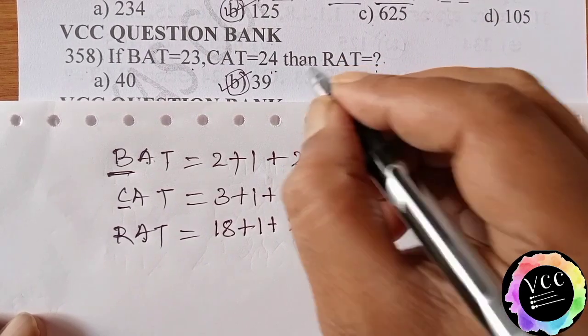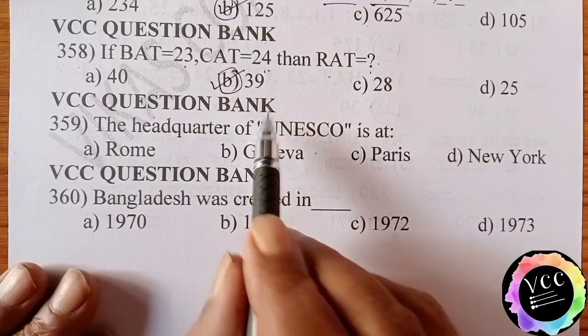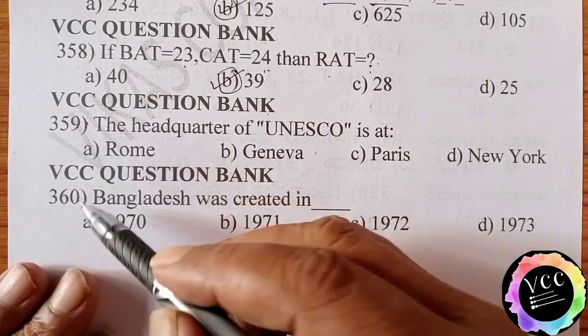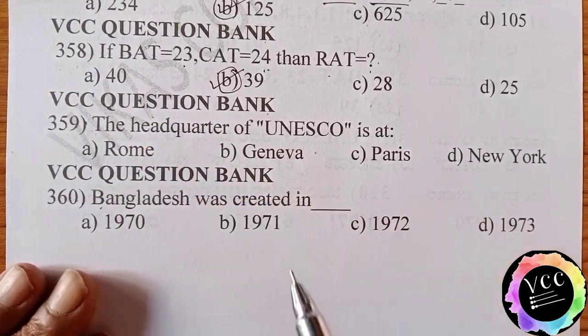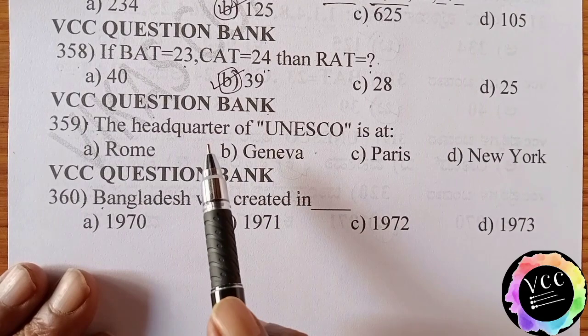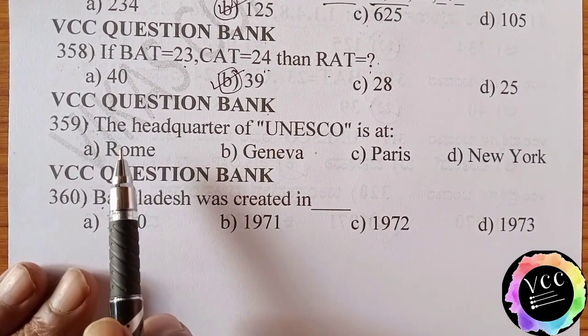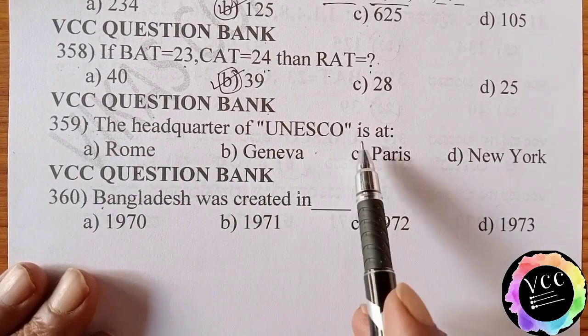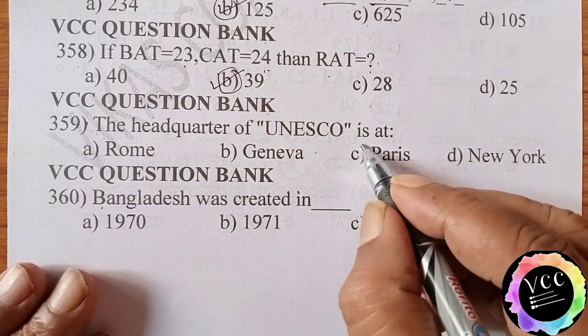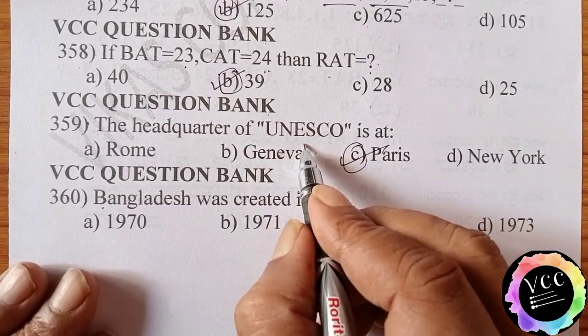Question bank 359 and 360, both are GK questions, very important in the Sainik School examination and other like RMS and other quantitative exams. So the headquarter of UNESCO is at Paris. UNESCO means it is a wing of UNO.